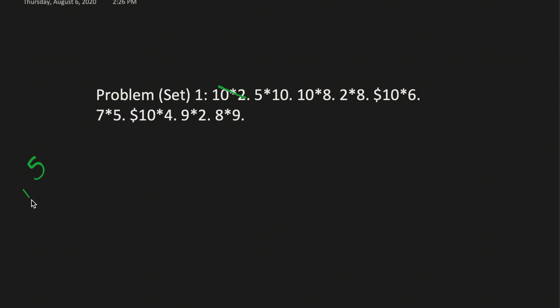Let's do 5 times 10. 5 times 1 is 5. 5 times 0 is 0. And we get 50. 20 and 50.